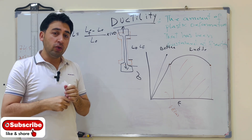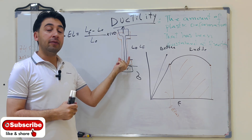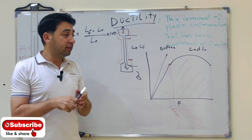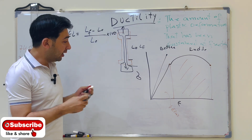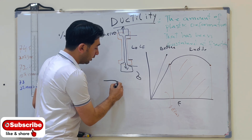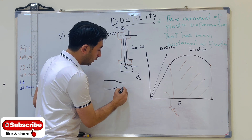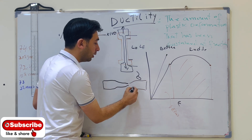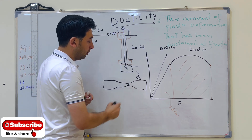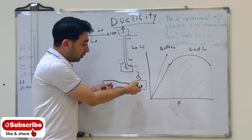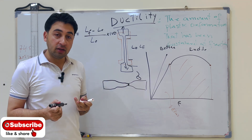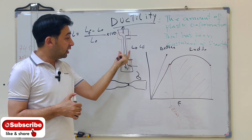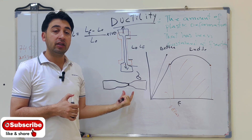From the tensile test, to find ductility you must have the original length of the specimen. Perform the test, and after the test the specimen will break. You bring the two broken pieces together — where there is necking and a fracture point — and measure the length. This final length lets you calculate percent elongation, which gives you ductility.